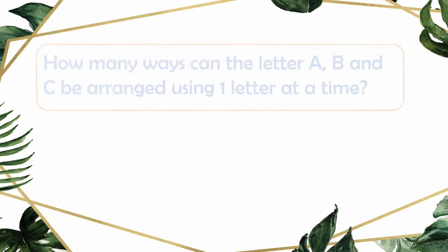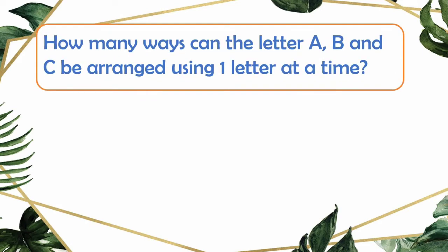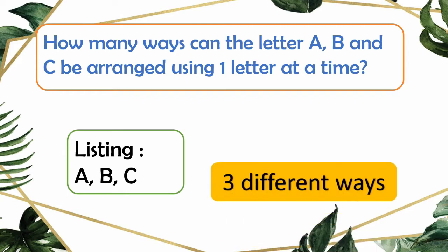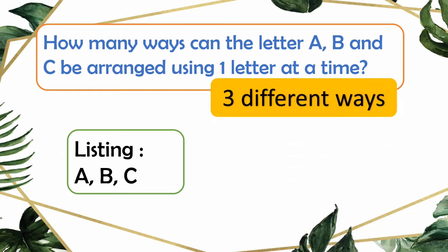Let's try another word problem. We will arrange the letters A, B, and C using one letter at a time. So how many ways do we have? Using the listing technique, we will have: A, B, and C. So we only have three different ways of arranging the letters A, B, and C when we use only one letter at a time. This applies your knowledge from the last learning activity sheet about finding the number of possible arrangements.